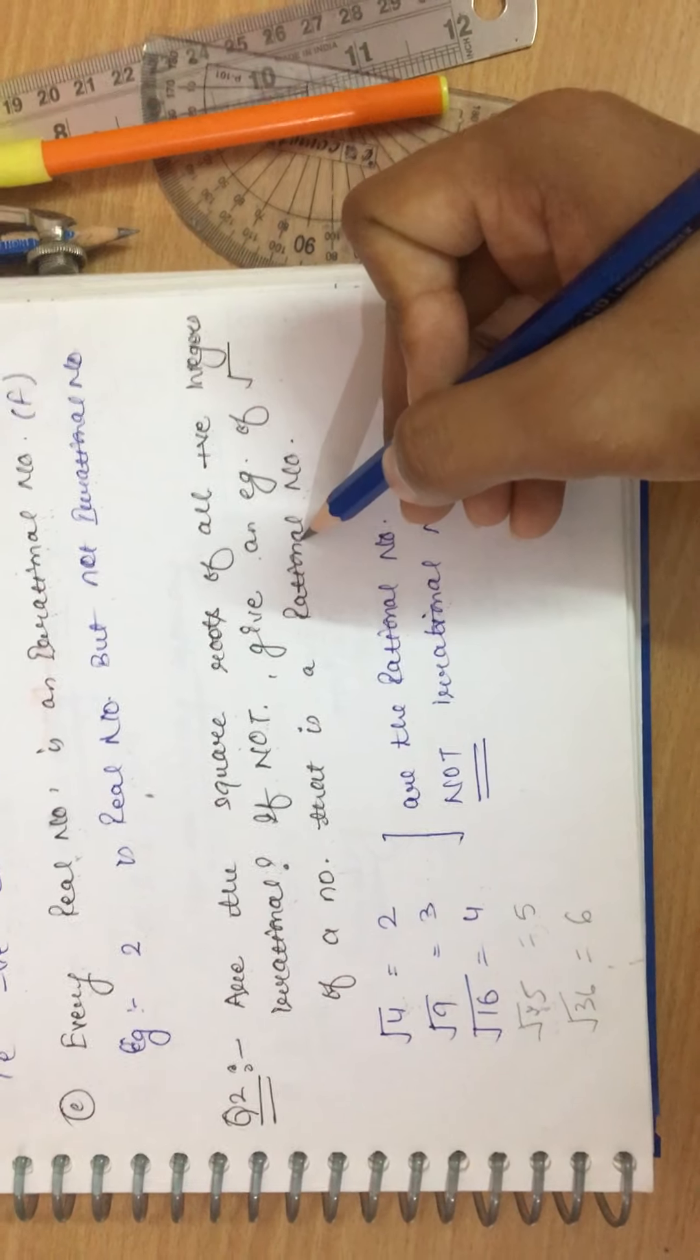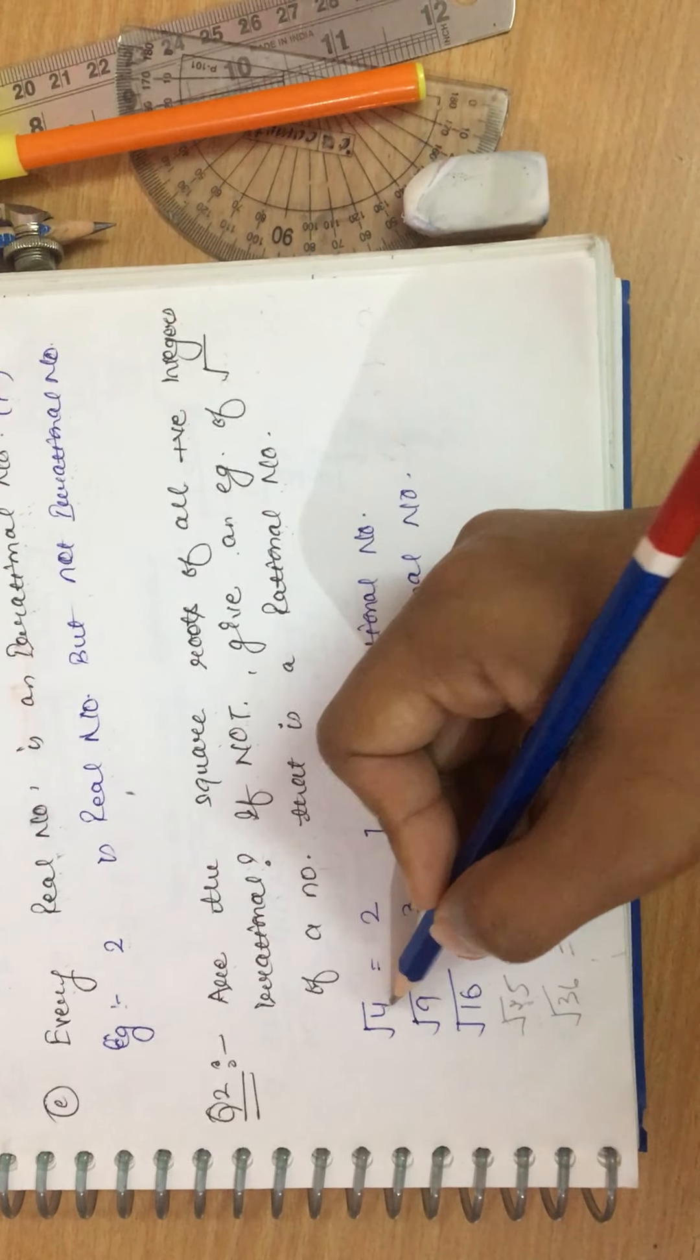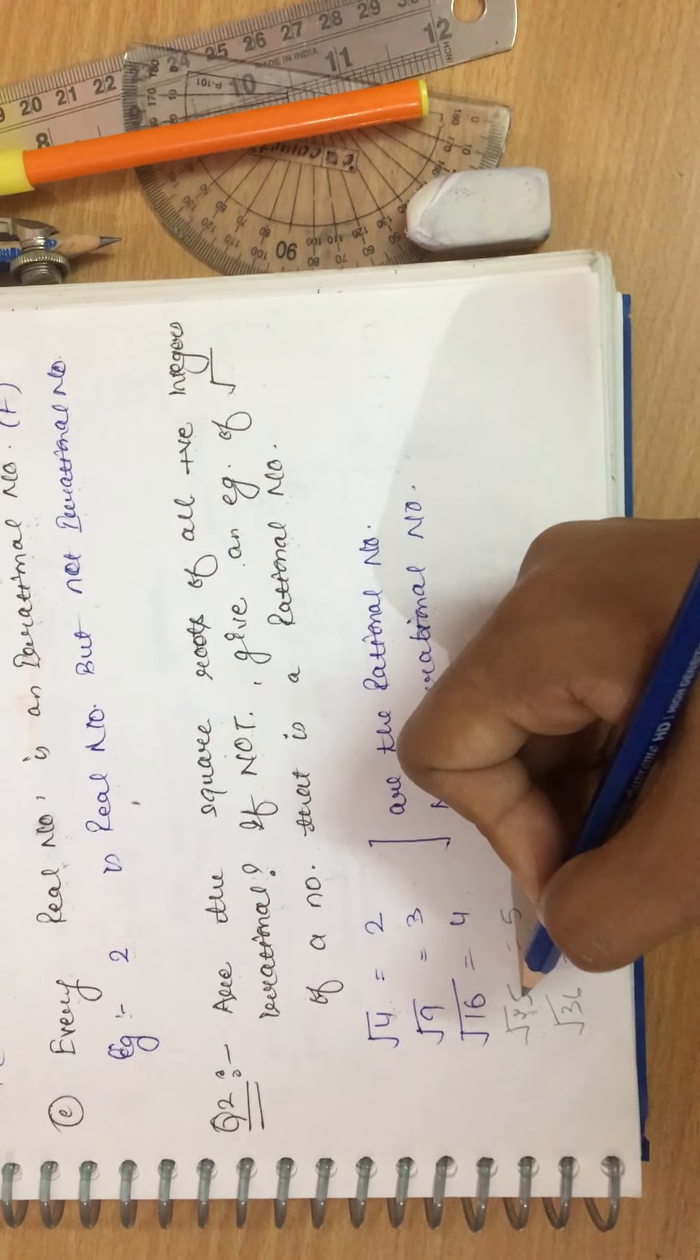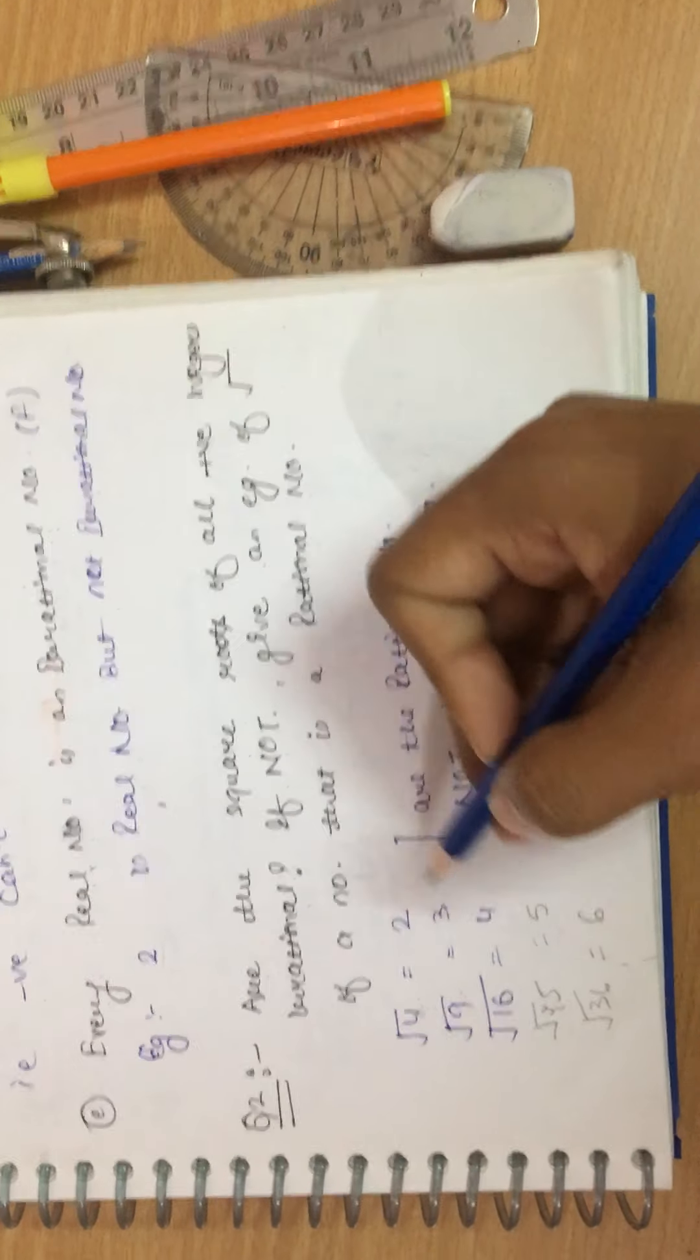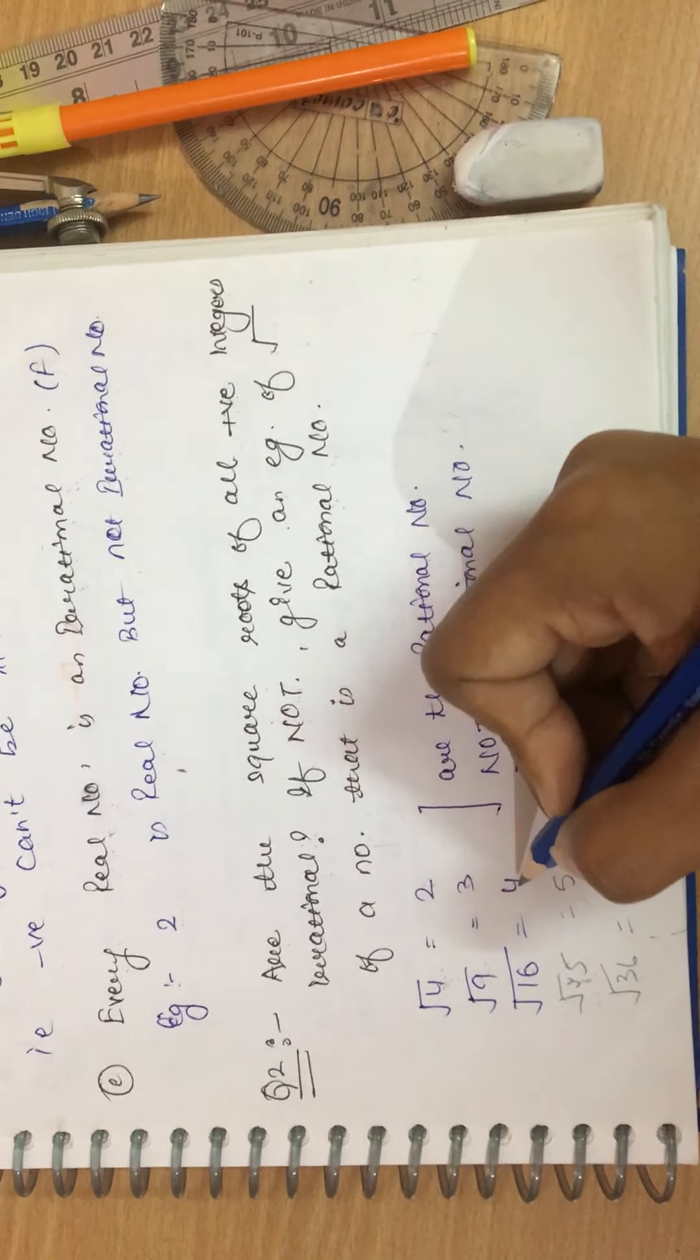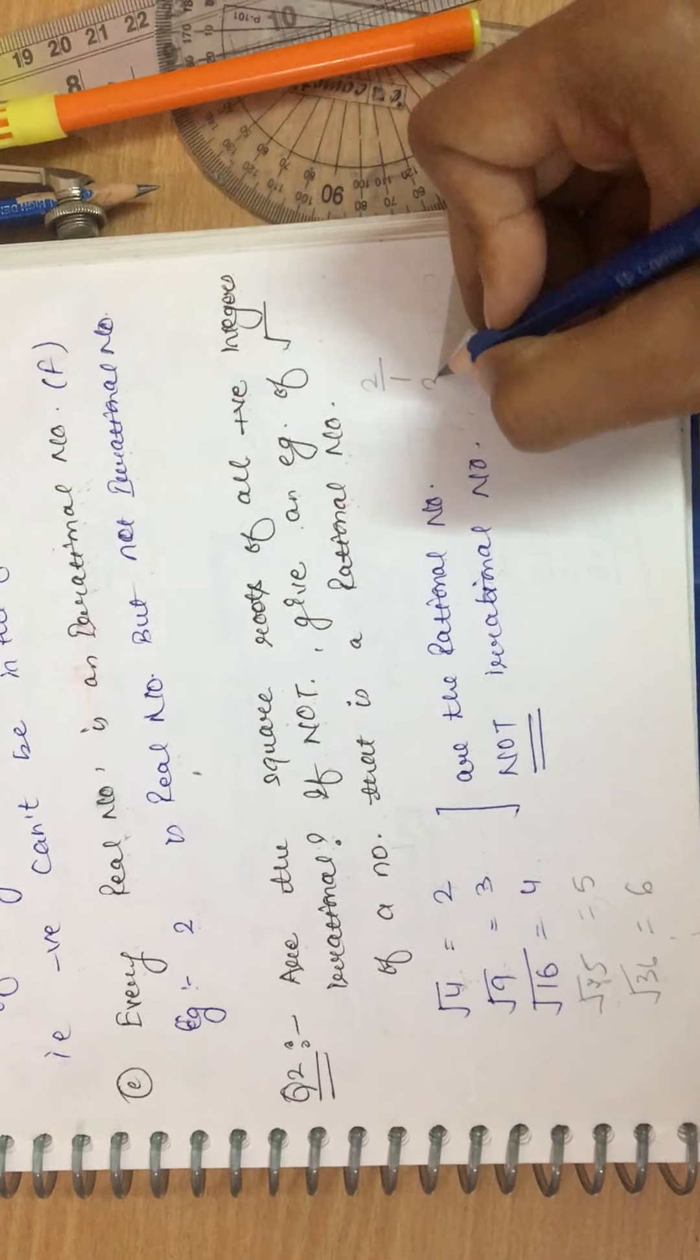Second question says are the square roots of all positive integers irrational numbers. If not, give an example of under root of a number that is a rational number. Examples can be under root 4, under root 9, under root 16, under root 24 and so on. Under root 4 is 2.